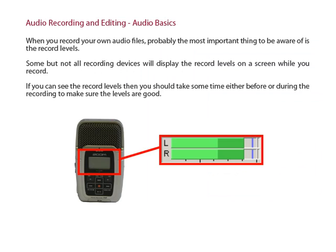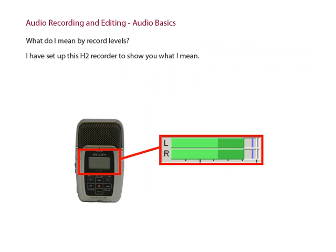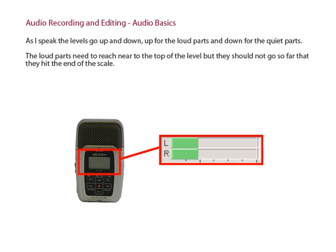When you record your own audio files, probably the most important thing to be aware of is the record levels. Some, but not all recording devices, will display the record levels on a screen while you record. If you can see the record levels, then you should take some time either before or during the recording to make sure the levels are good. I have set up this H2 recorder to show you what I mean. As I speak, the levels go up and down.